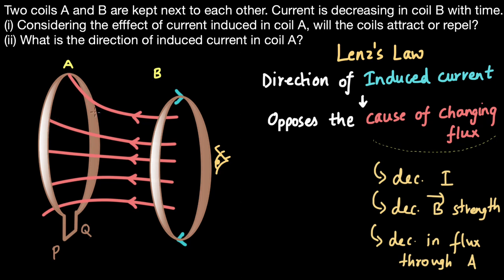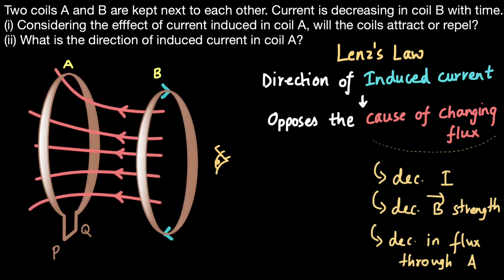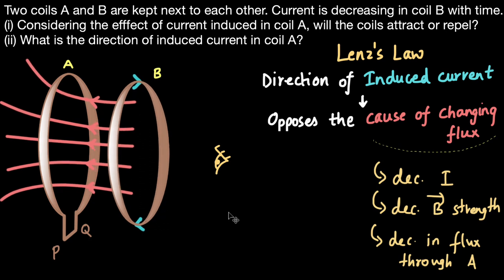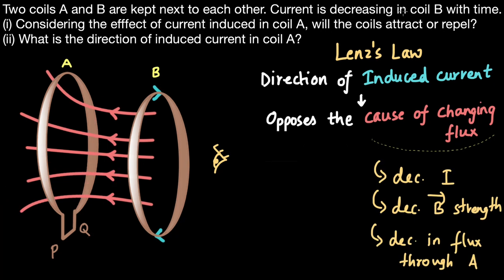If we move coil B towards coil A, the flux through coil A increases. So coil A must be pulling coil B towards itself in order to oppose the decreasing flux and increase the flux through itself. In this case, the coils attract.